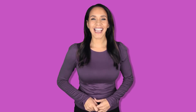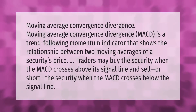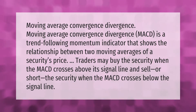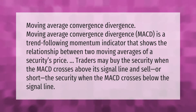Moving Average Convergence Divergence (MACD) is a trend-following momentum indicator that shows the relationship between two moving averages of a security's price. Traders may buy the security when the MACD crosses above its signal line, and sell or short the security when the MACD crosses below the signal line.